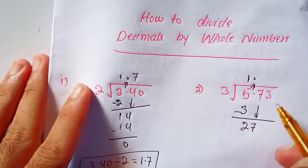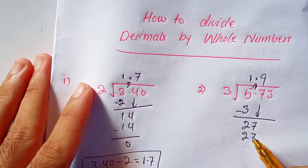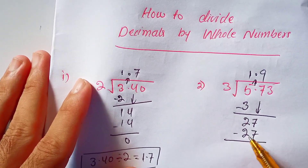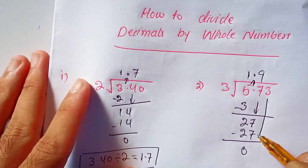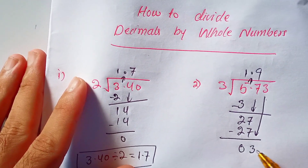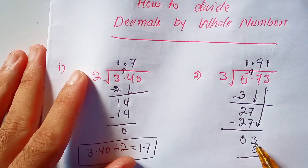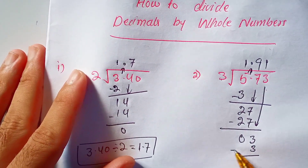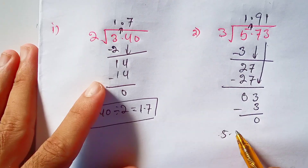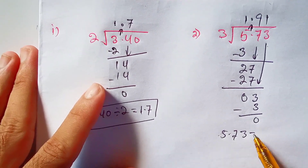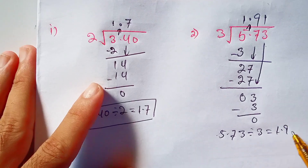3 times 9 is 27. Subtract 27 from 27, the remainder is 0. Bring down the 3 near 0 to make it 3. 3 times 1 is 3. Subtract 3 from 3, the remainder is 0. So we can say that 5.73 divided by 3 is equal to 1.91.